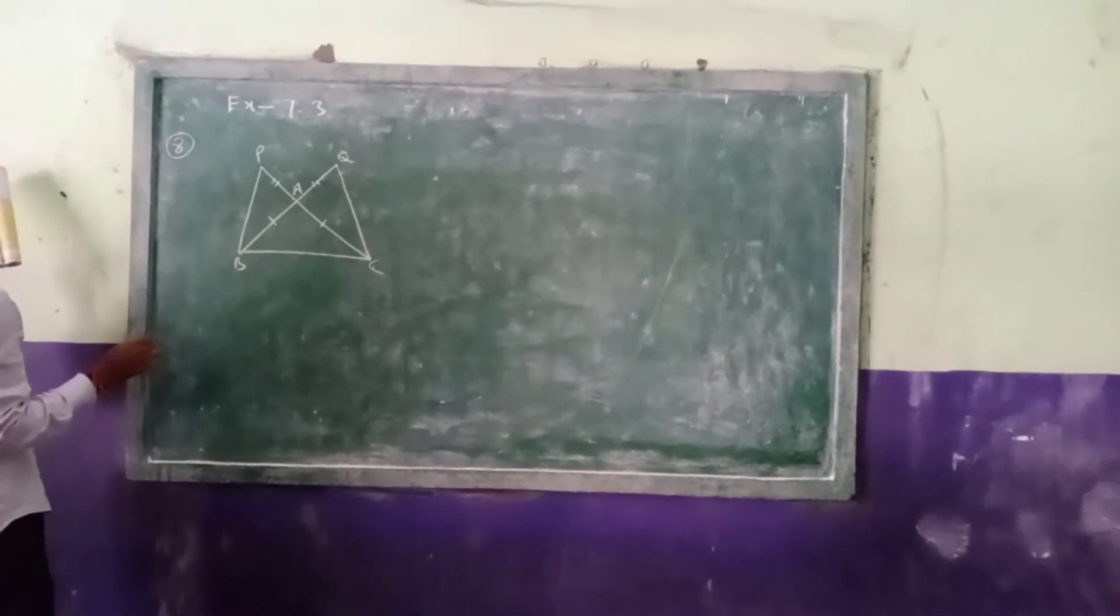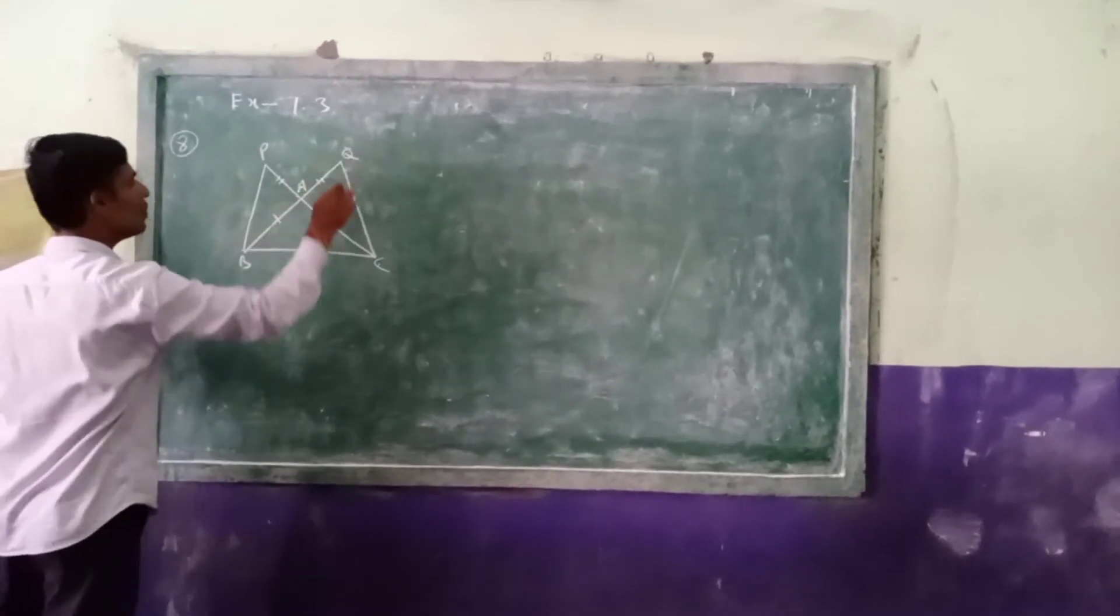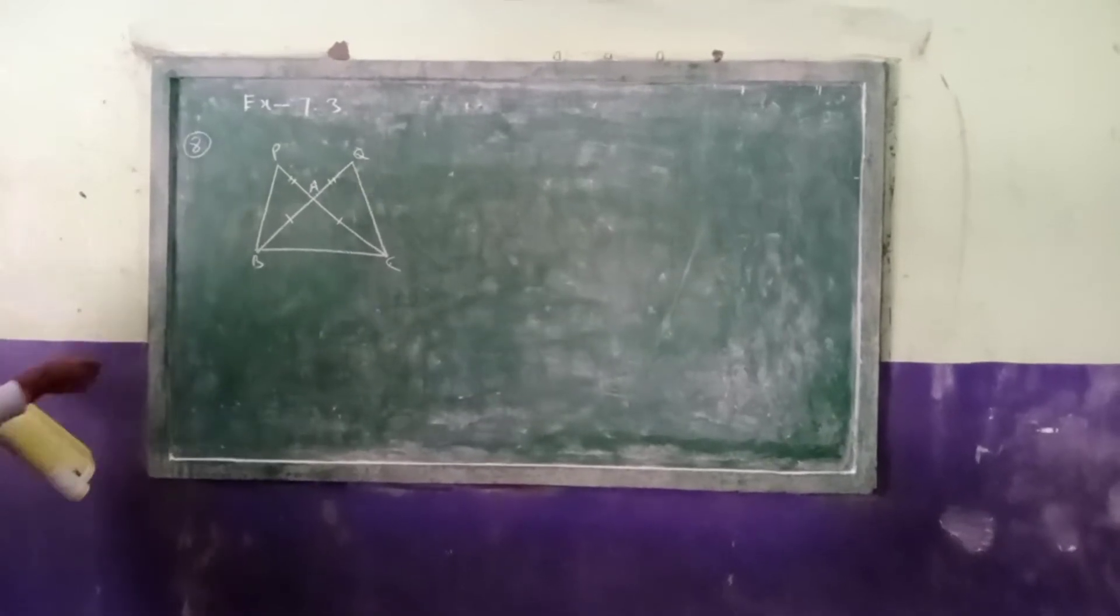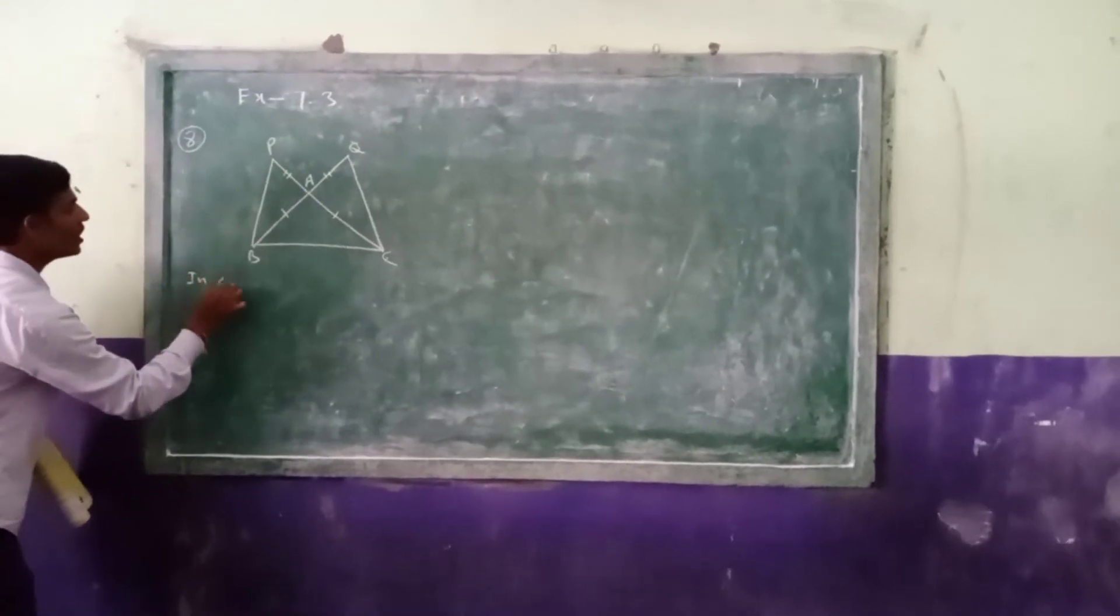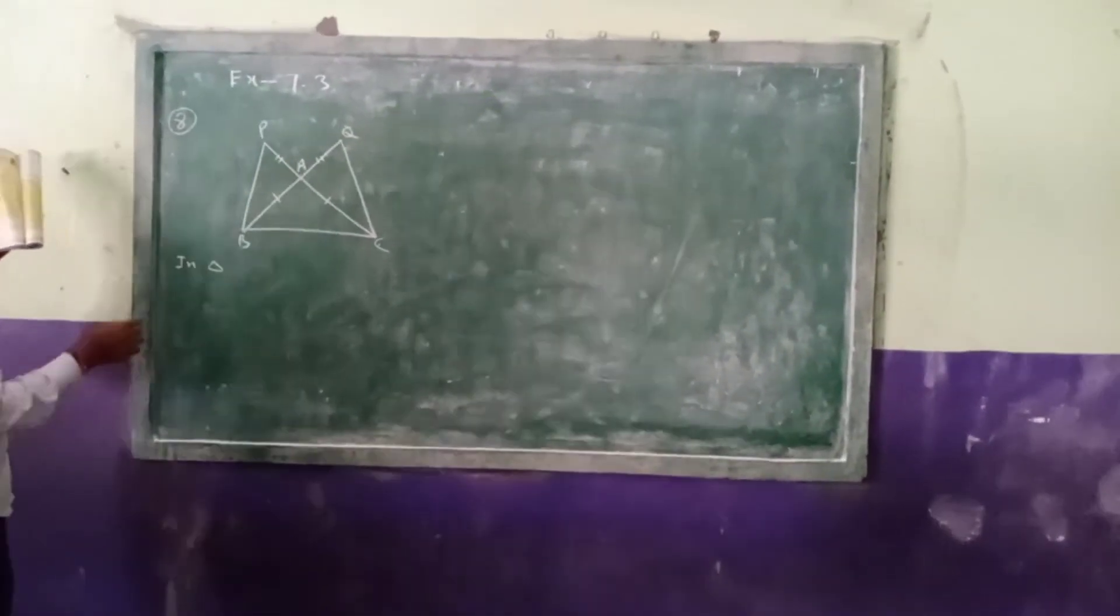Show that PB equal to QC. So now we have to show PB equal to QC. We have to prove this one. We have to compare in triangle APB.